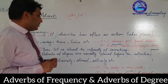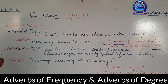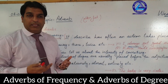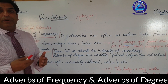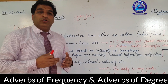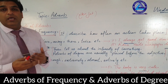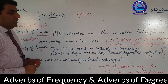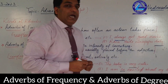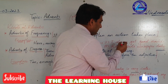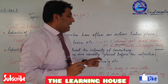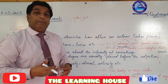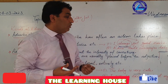Today I am going to start the next two kinds of adverbs: adverb of frequency. It describes how often an action takes place. For example: 'I always get good marks.' In this sentence, 'always' is the word that will be called adverb of frequency because it is enhancing the meaning of getting good marks.